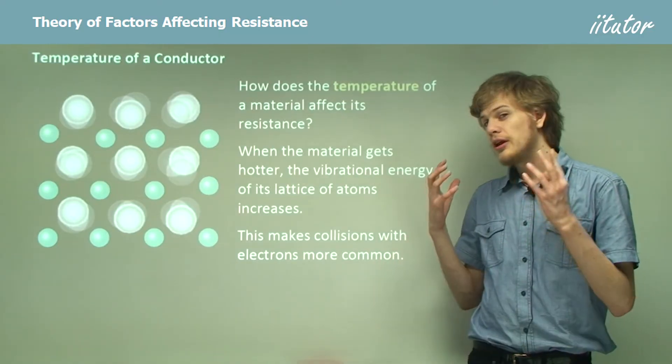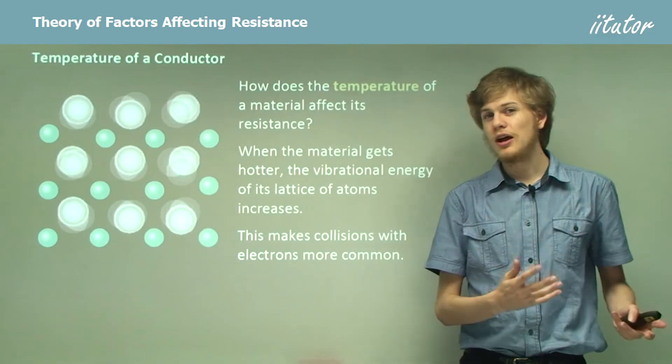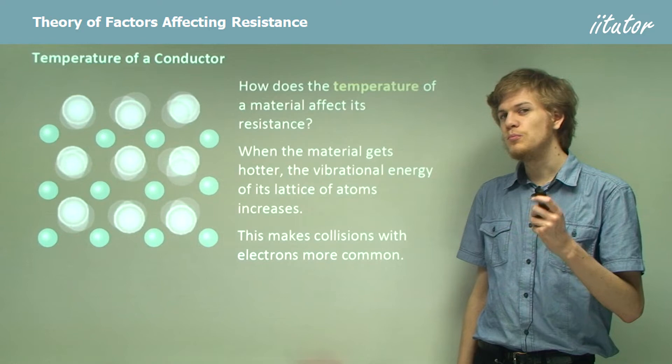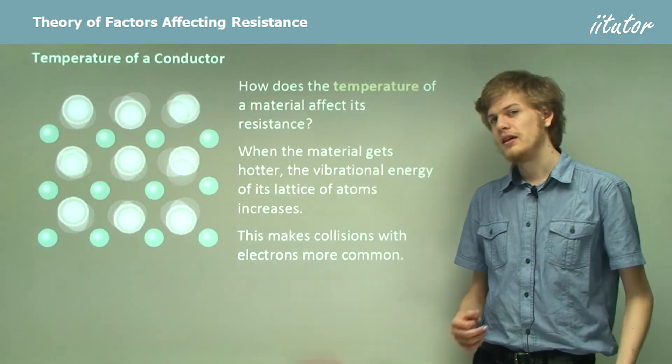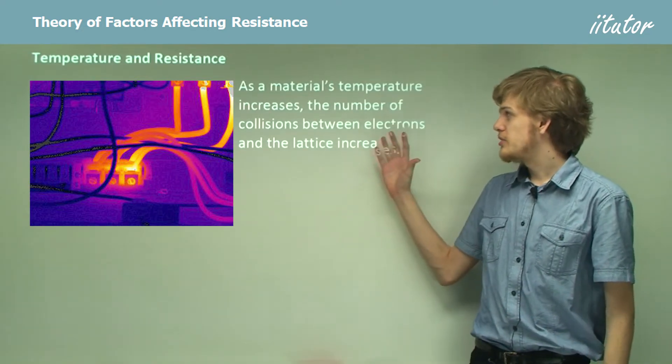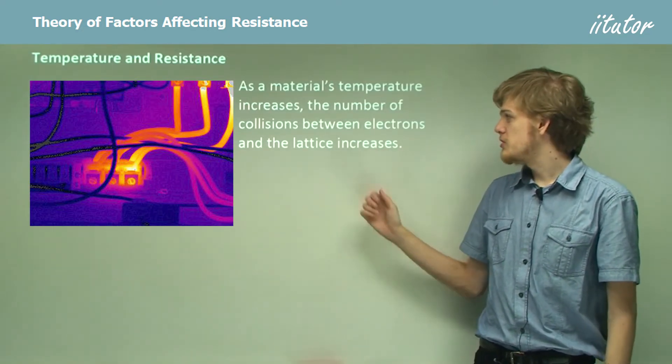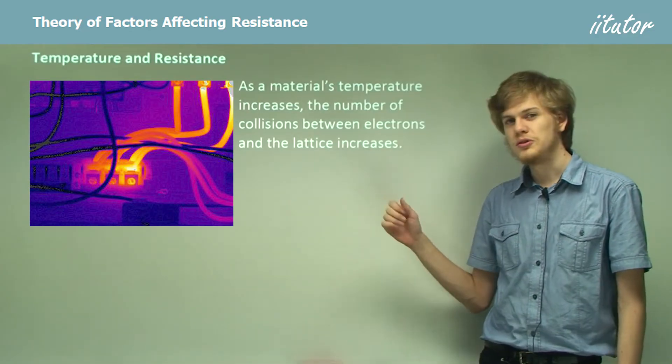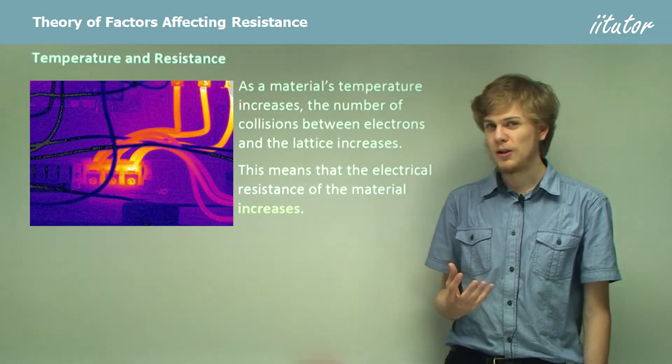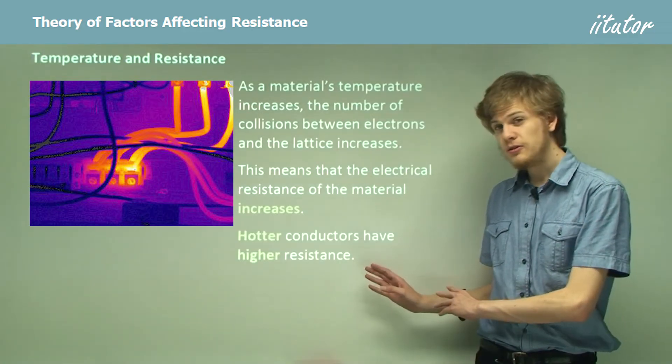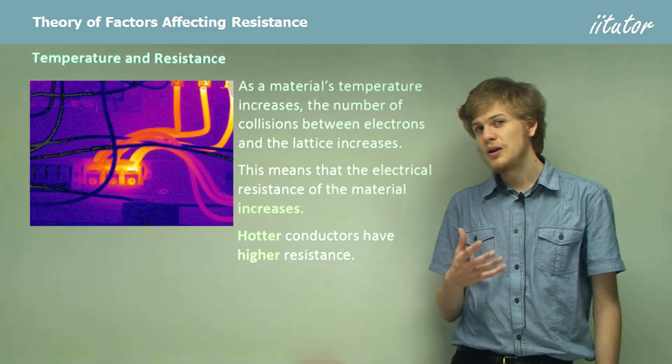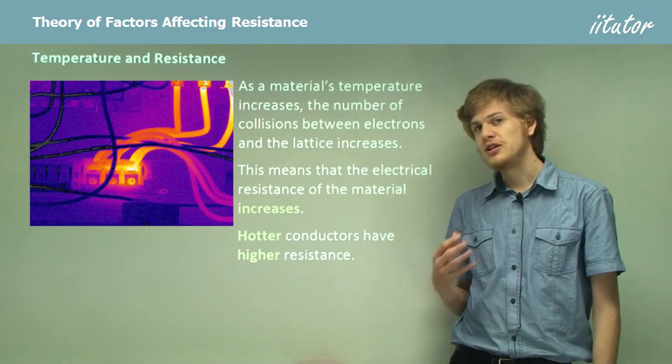So when the material gets hot, it's easier for the electrons to collide with the lattice. And what does this mean? It means that it's more resistant than if it's a lower temperature. So as a material's temperature increases, the number of collisions between electrons and the lattice also increases. This means that the electrical resistance of the material will increase as well. So hotter conductors have higher resistance, although in practice it takes quite a large temperature before the resistance changes significantly.